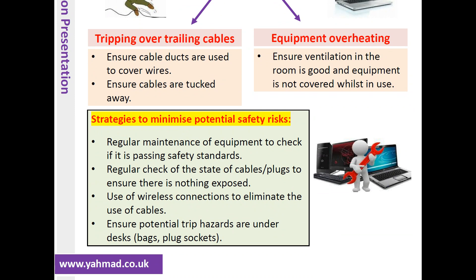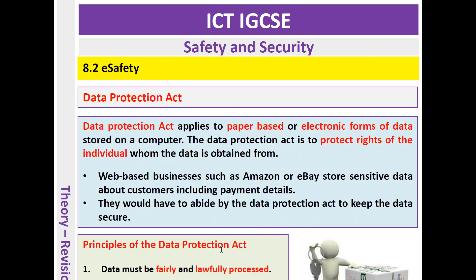What strategies can we apply to minimise potential safety risks? We can make sure the equipment has been checked on a regular basis — for example, in design technology there's lots of machinery and there are always stickers on the back telling us when the equipment last passed safety standards. If you're not checking your equipment over a number of years, there's more risk of something going wrong. Regularly check the state of cables and plugs to ensure there's nothing exposed. The use of wireless connections can eliminate the use of cables, and ensuring potential trip hazards are kept under the desks.